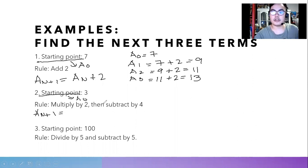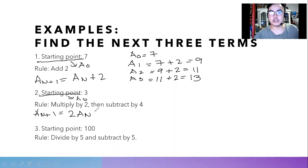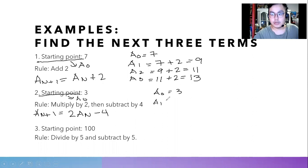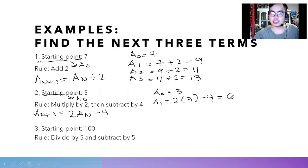For the second example, what we're going to do with the current term a sub n is to multiply by two, then subtract it by four — placing minus four. So our a sub zero for this example is three. To look for a sub one, we multiply the current term three by two, then subtract four. Two times three is six, then minus four, which equals two.